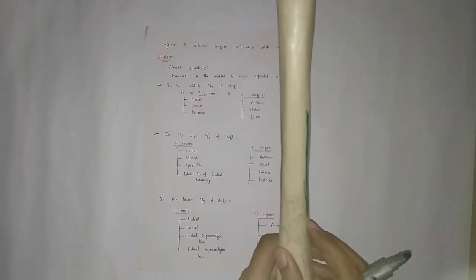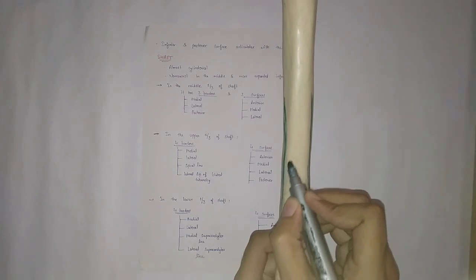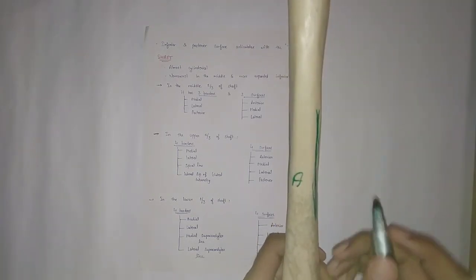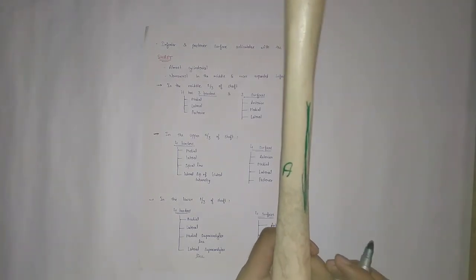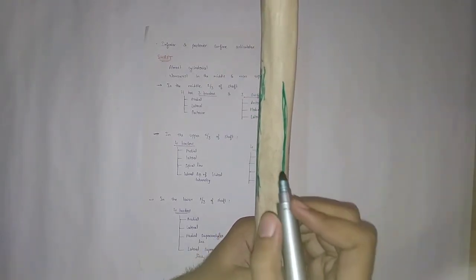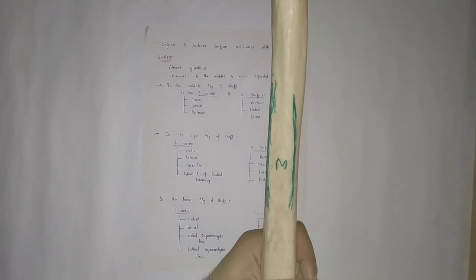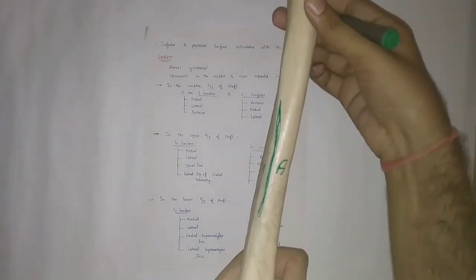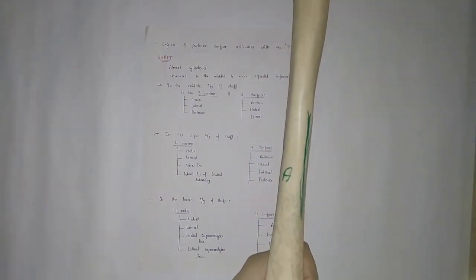The area between the lateral border and the anterior border gives us the anterior surface. The area between the lateral border and the posterior border gives us the lateral surface. The area between the posterior border and the medial border gives us the medial surface.